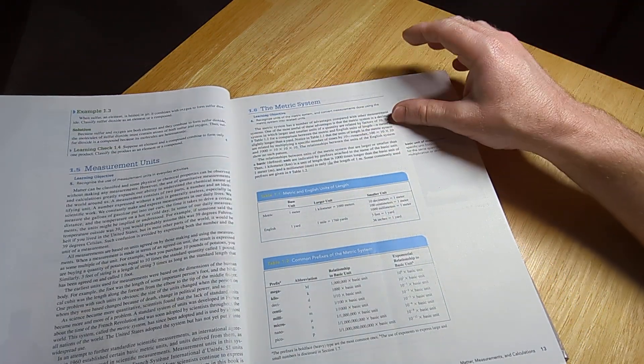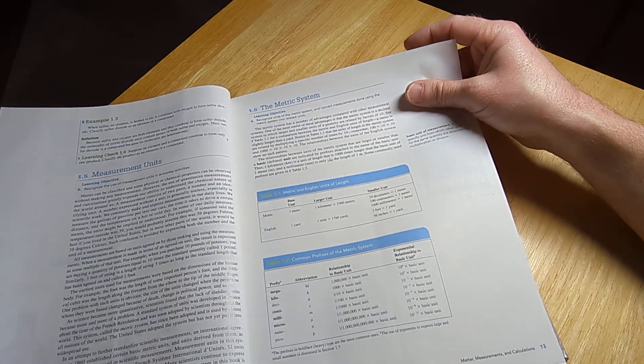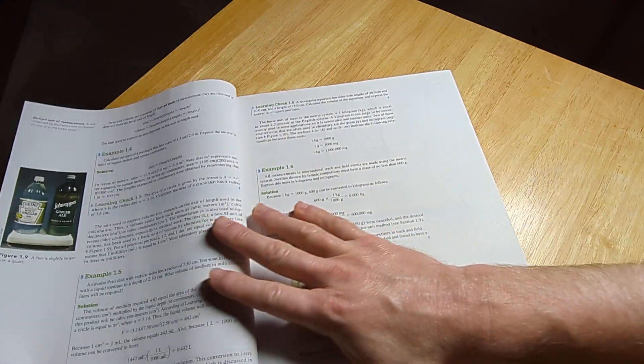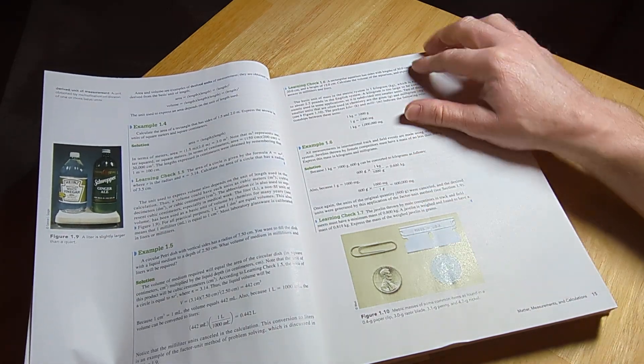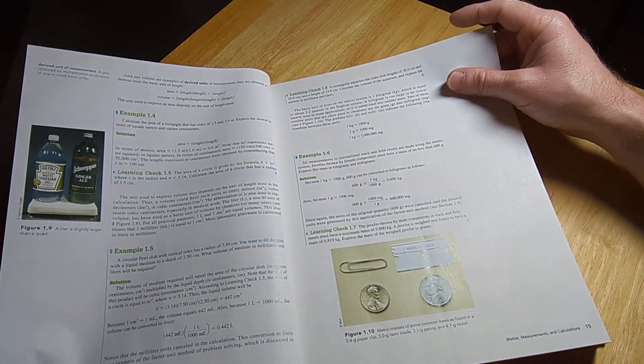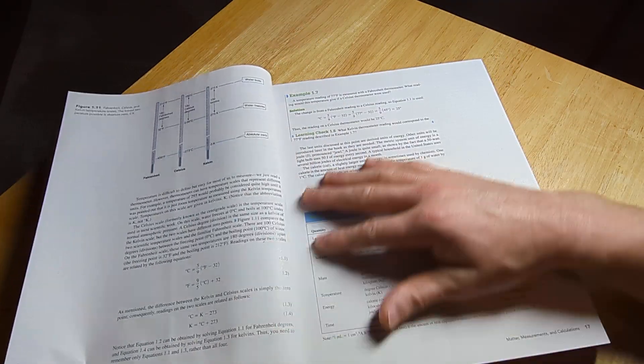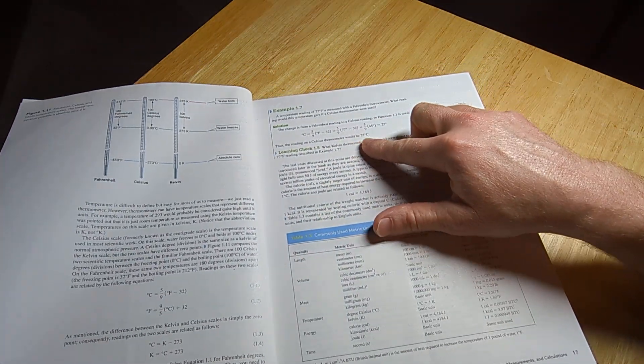The Metric System. There are different examples here using mathematics. Basic math, just multiplication. Same thing here. Some basic math.